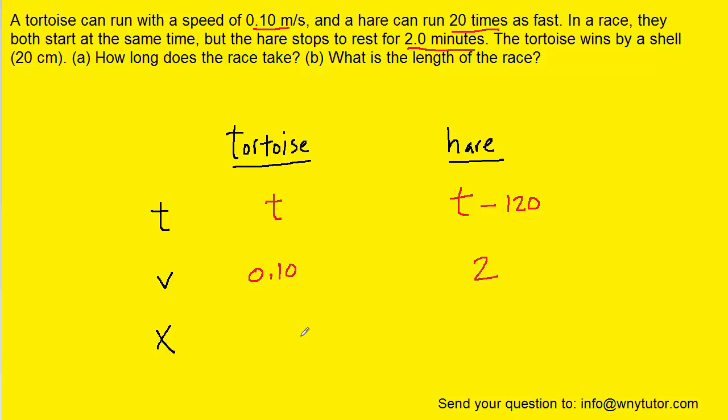And finally on to the distances, we can see from the question that the tortoise actually travels a distance greater than the hare by 20 centimeters. Now if we convert that into the standard unit of meters, we would have 0.20 meters. The tortoise will travel a greater distance, so what we're going to do is let the hare's distance be x, and therefore the tortoise will have traveled a distance of x plus 0.20, since it had traveled farther.